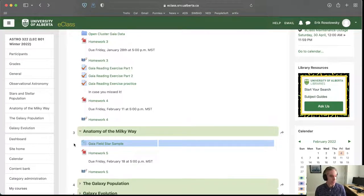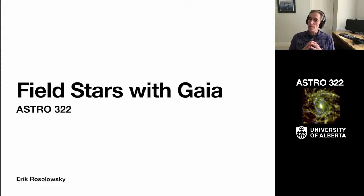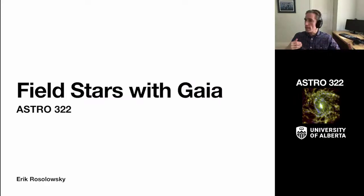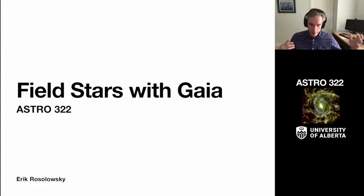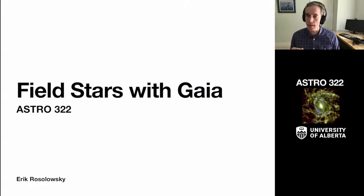What we're doing today is studying the field star population with Gaia. This is really starting to grab everything we learned in the first part of the course — observational astrophysics, the Hertzsprung-Russell diagram, and other observational effects — and meshing those into galactic astrophysics. We'll see a little bit of the interstellar medium, which is what we're covering on the theory side today.